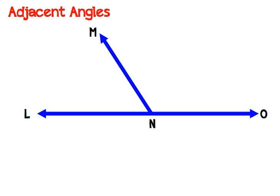Adjacent angles are right next to each other. Now they're two separate angles but they are right next to each other. They're like neighbors. So if we take a look here angle LNM is adjacent or next to angle ONM.